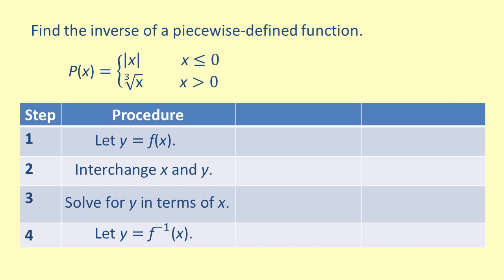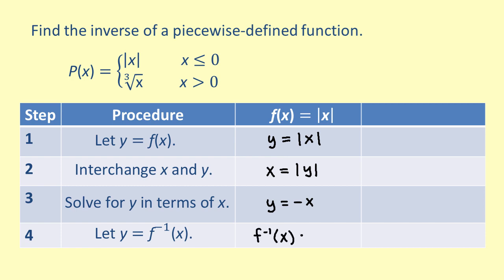First, we will consider the absolute value of x, which we will define as f of x for now. Following the table outline, begin by letting y equal f of x, which gives us y equals the absolute value of x. Then, interchange x and y to get x equals the absolute value of y. Now, solve for y in terms of x. Note that solving for y yields two answers: y equals x and y equals negative x. Because this function is defined only for values less than or equal to 0 in p of x, the only correct solution is y equals negative x. Finally, let y equal f inverse of x. Thus, the inverse function of f of x is f inverse of x equals negative x.